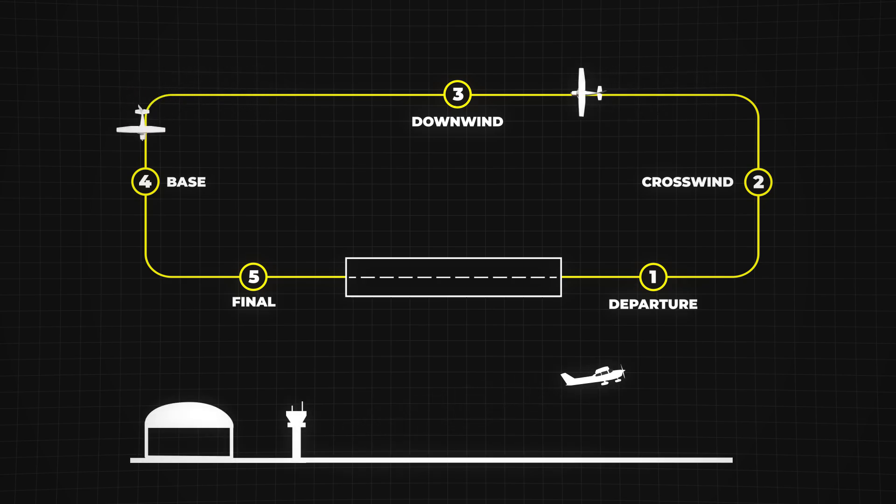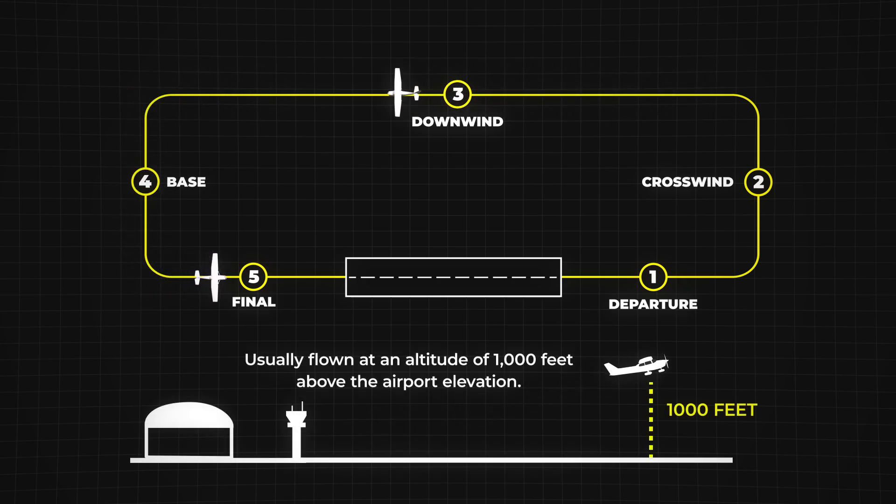The traffic pattern is usually flown at an altitude of 1,000 feet above the airport elevation.